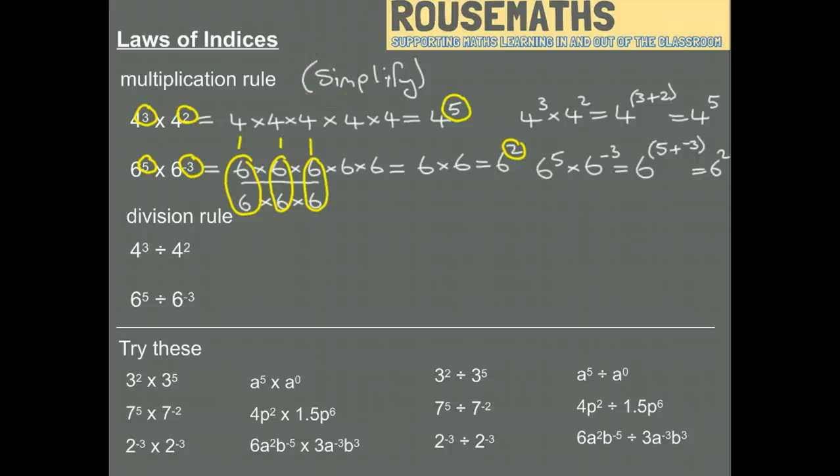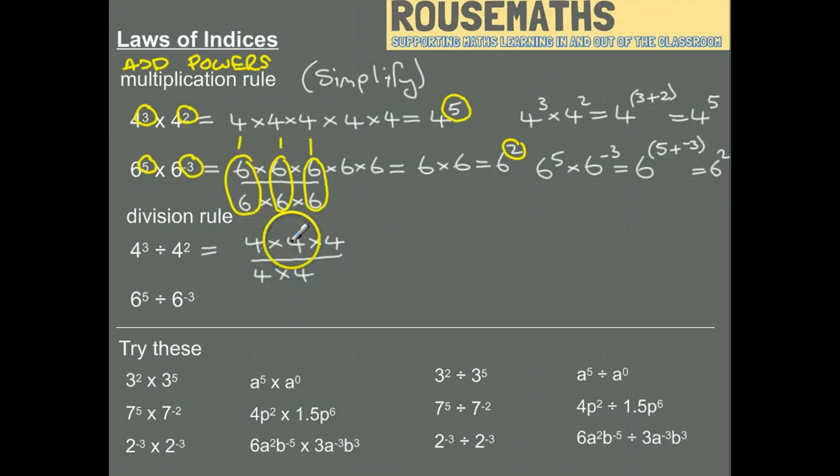You can probably predict what's going to happen with the division, but let's just check it. For this one, we've got 4 to the power of 3 divided by 4 to the power of 2. I've written that out as 4 times 4 times 4 divided by, and written as a fraction, 4 times 4.